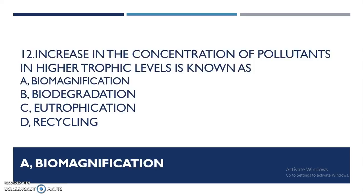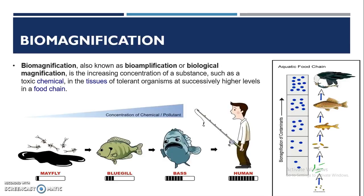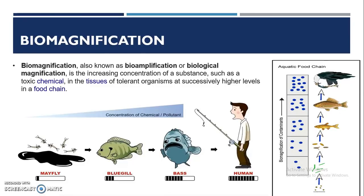An increase in the concentration of pollutants at higher trophic levels is known as biomagnification. Biomagnification is the increasing concentration of substances such as toxic chemicals in the tissues of organisms at successively higher levels in a food chain. The toxic substance concentration increases as you move up the food chain — that is biomagnification.